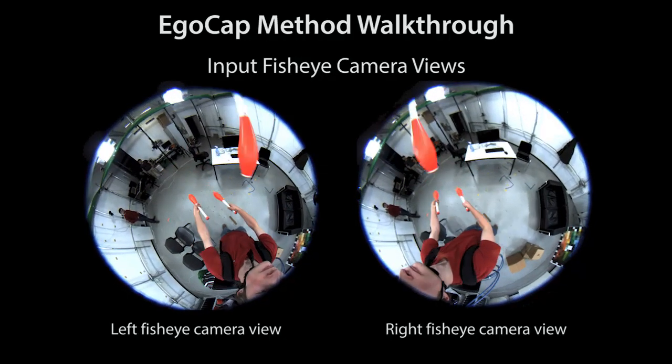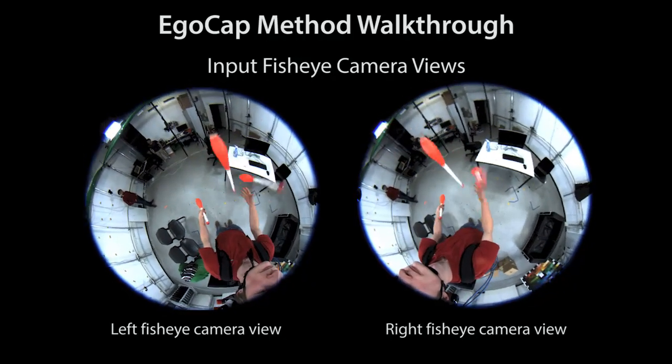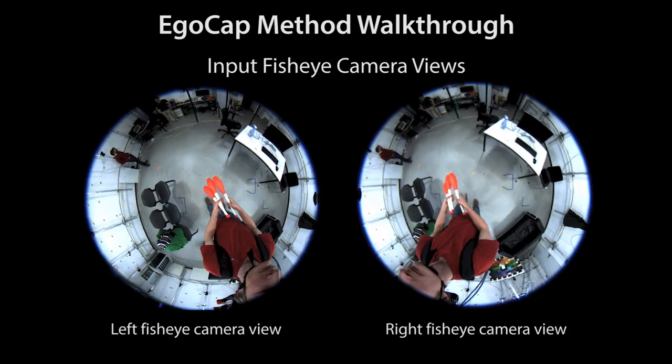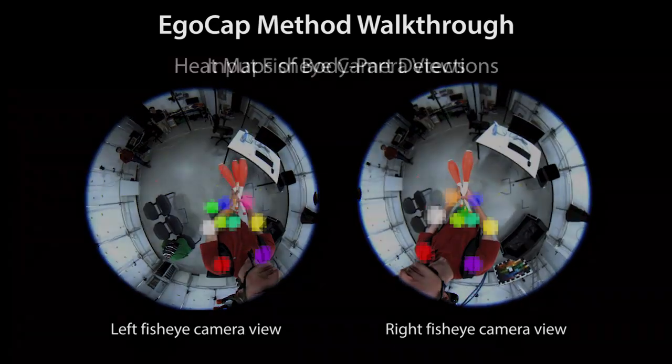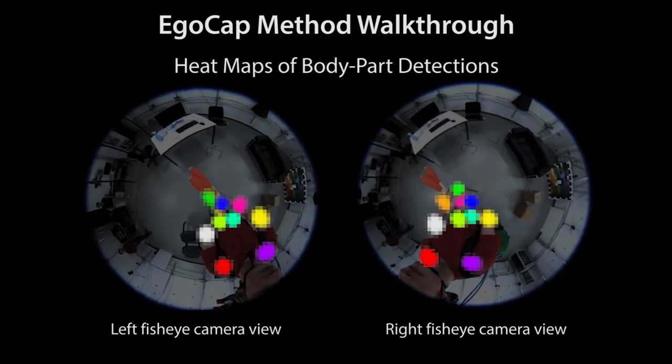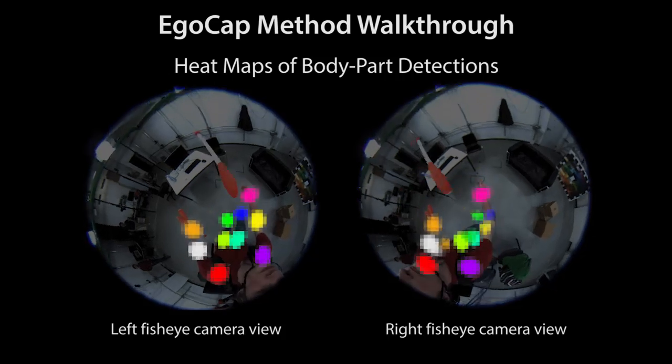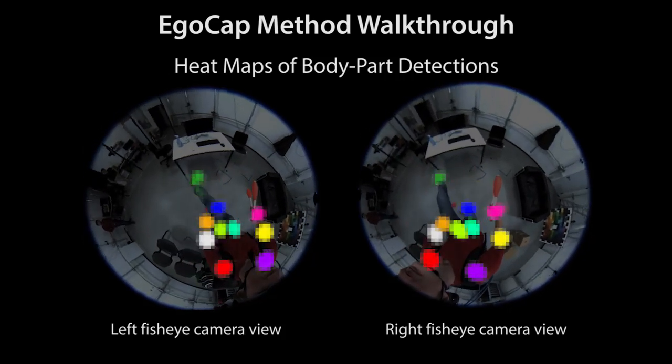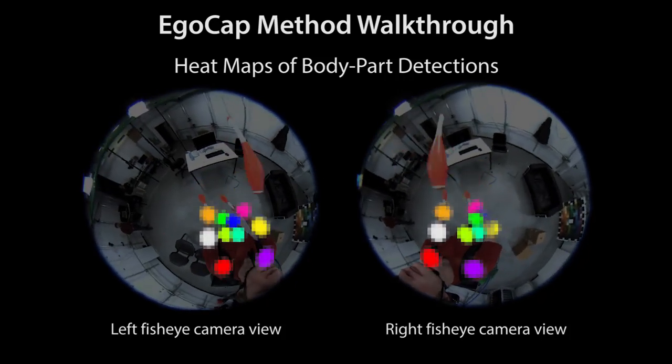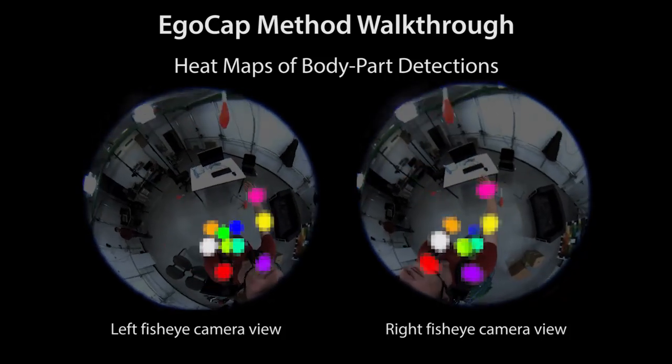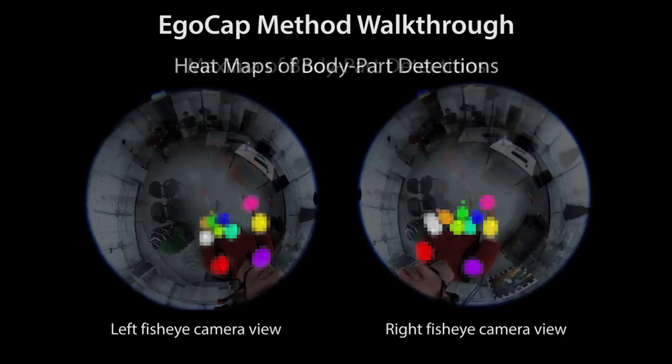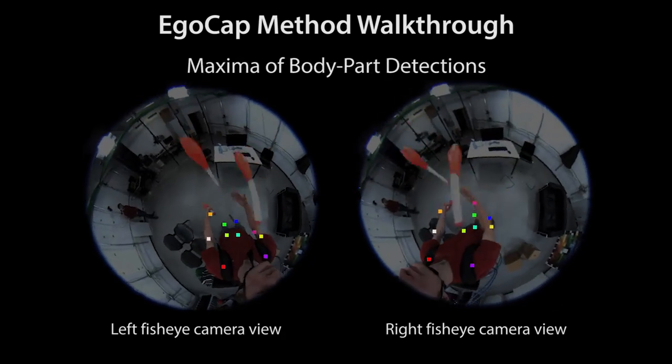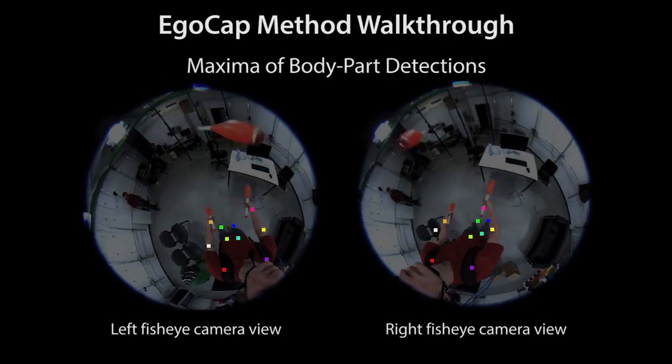Now we explain the components of our motion capture approach. Here we see the input stereo view to our method. As one source of information, we use body part locations found with a novel ConvNet-based detector. It is trained on an extensive new dataset of real annotated fisheye images which we created. We show some training examples later in this video. The maxima of the detections help constrain joint positions during pose optimization.